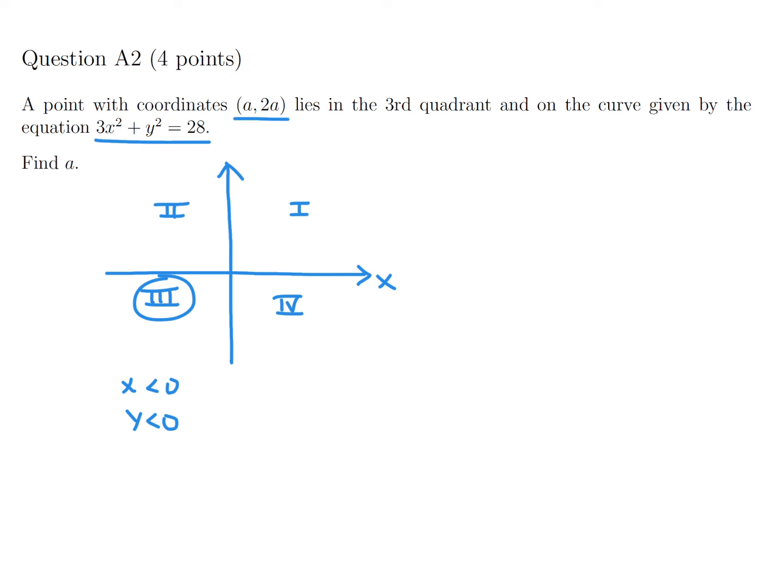Okay, so let's plug that into this equation. We get 3A squared plus 2A all squared is equal to 28, and therefore that would be 3A squared plus 4A squared is equal to 28, and that's 7A squared.